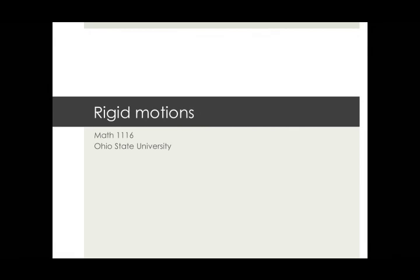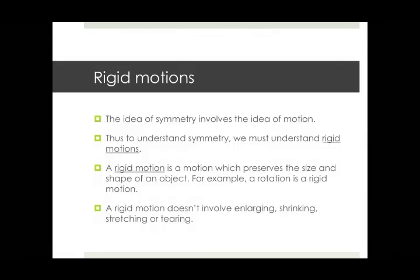Now we're going to use an extra word here, which is maybe unnecessary. We're going to use the word rigid and talk about rigid motions. Those are the only ones we want to consider. Now what is a rigid motion? A rigid motion is a motion which preserves the size and shape of an object.